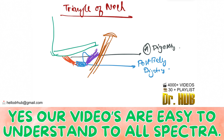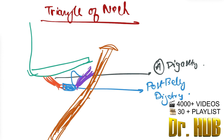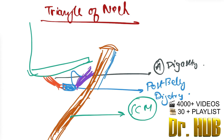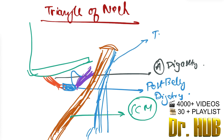This will be the sternocleidomastoid, so it will swirl around. This is the SCM, that is the sternocleidomastoid, and posteriorly there will be a trapezius. This is going to be the trapezius.